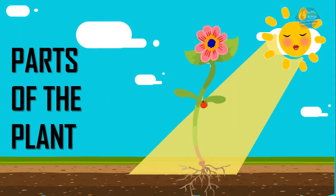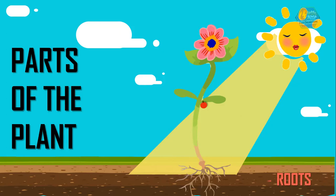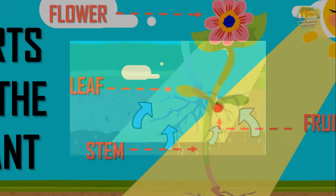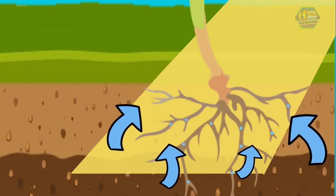Just like humans, plants have their own basic parts. Let us discover things about them. The basic parts are the roots, stem, fruit, leaf, and flower. Roots are the bottom part that holds the plant in the ground and helps it get water from the soil.